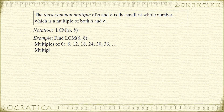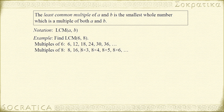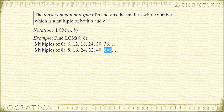Next, let's list the multiples of 8. Those are 8 times 1, 8 times 2, 8 times 3, 8 times 4, 8 times 5, 8 times 6, and so on. Evaluating: 8 times 1 is 8, 8 times 2 is 16, 8 times 3 is 24, 8 times 4 is 32, 8 times 5 is 40, and 8 times 6 is 48. Now we look and see what's the smallest number that's in both lists, and we can quickly see that it's 24.